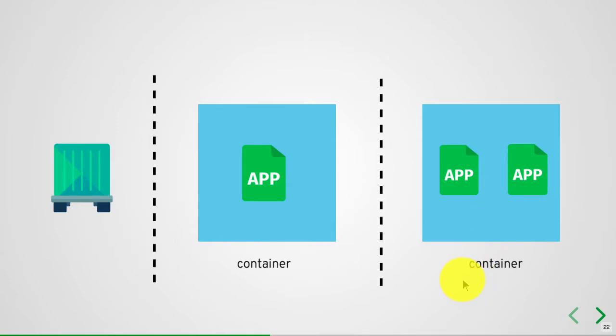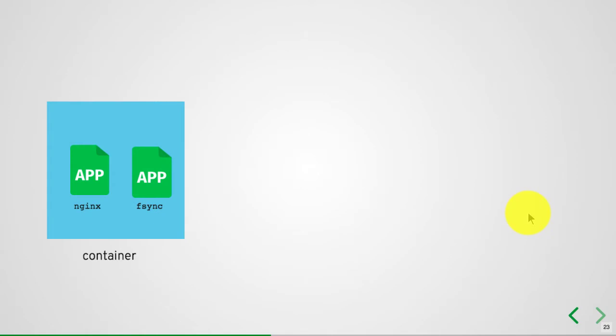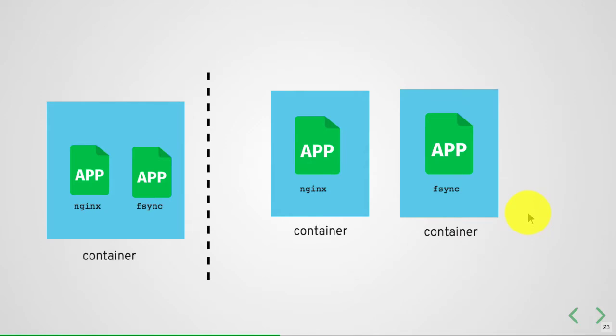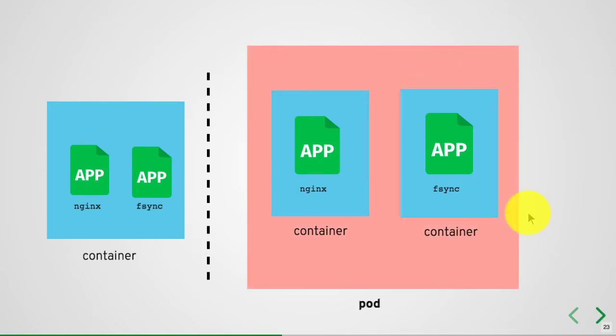So it is an anti-pattern to run these applications in the same container, but you may still need to run them together. That's where Kubernetes comes in and gives you a solution. Kubernetes allows you to run these applications together — not in one container, but in two different containers — while scheduling and hosting them on the same node, and providing additional mechanisms to make it easier for them to connect together.